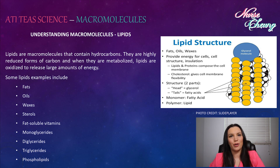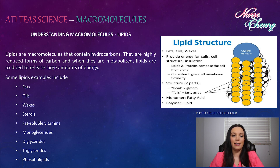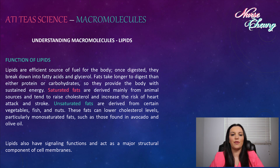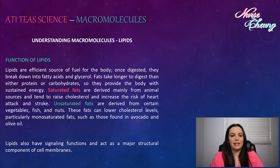Lipids are macromolecules that contain hydrocarbons. They are highly reduced forms of carbon, and when metabolized, lipids are oxidized to release large amounts of energy. Some examples of lipids include fats, oils, waxes, sterols, fat-soluble vitamins, monoglycerides, diglycerides, triglycerides, and phospholipids. Lipids are an efficient source of fuel for the body. Once digested, they break down into fatty acids and glycerol. Fats take longer to digest than either protein or carbohydrates, so they can provide the body with sustained energy. Saturated fats are derived mainly from animal sources and tend to raise cholesterol and increase risk of heart attacks and strokes. Unsaturated fats are derived from certain vegetables, fish, and nuts. These fats can lower cholesterol levels, particularly monounsaturated fats, such as those found in avocados and olive oil. Lipids also have signaling functions and act as a major structural component of cell membranes.